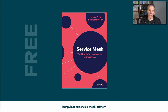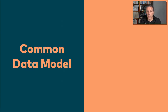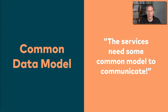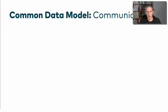What I'm going to talk about now are things that I saw out in the wild that made projects fail or at least have some problems. I will start off by giving a name to each of these issues or challenges. The first one is the common data model. A citation from a project that might run into that problem is: the services need some common model to communicate.